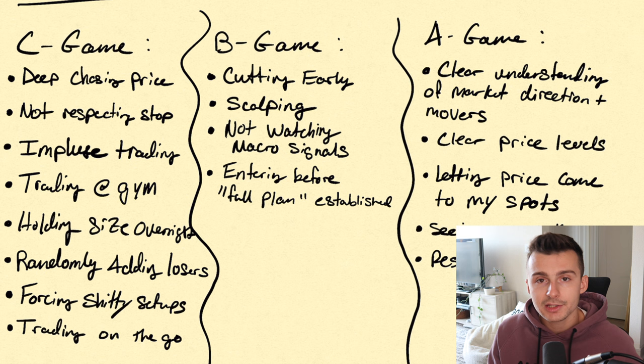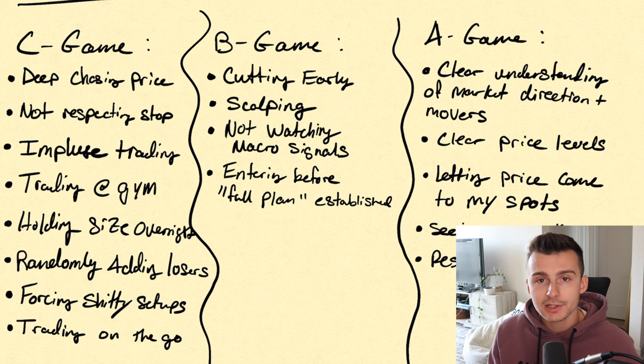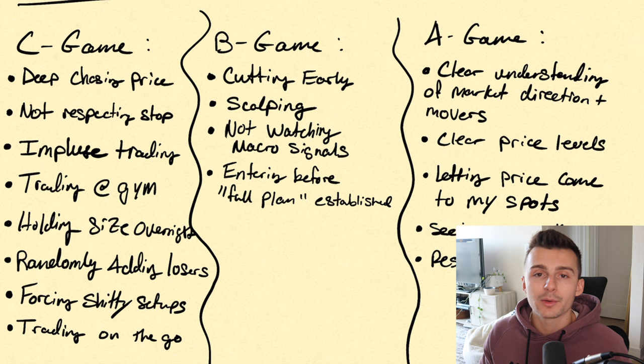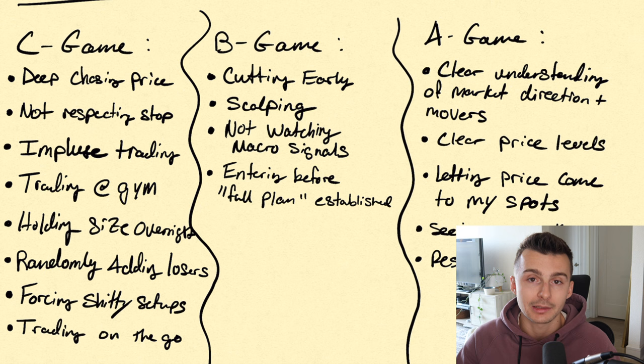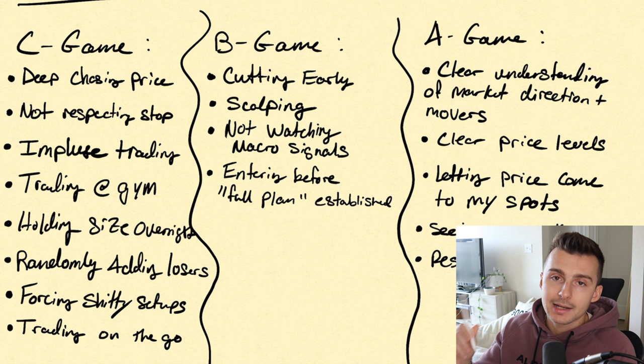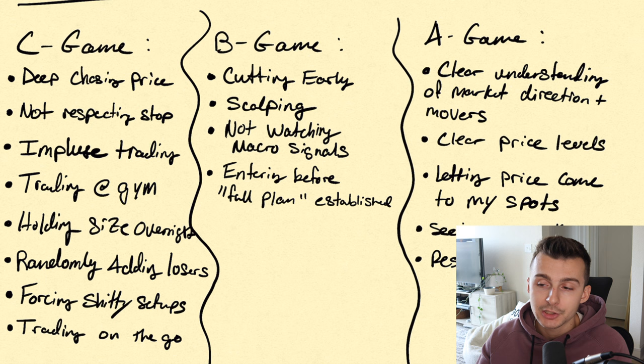At the end of the day, it comes down to trying to suck less — getting rid of as much C game as possible and working on that. You're not going to get rid of them entirely; they'll come back. But if you can actively recognize when they're happening, it contributes to fewer losers, fewer large losers, and ultimately spending more time in that A and B game, which is going to be a much more profitable strategy in the long run.